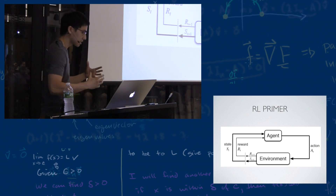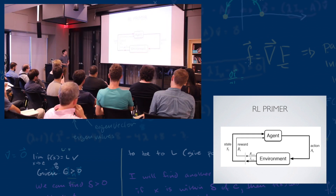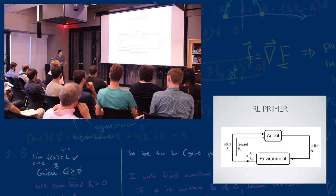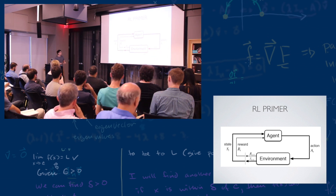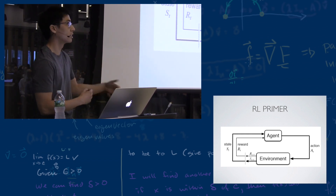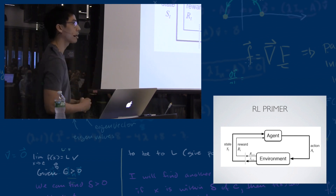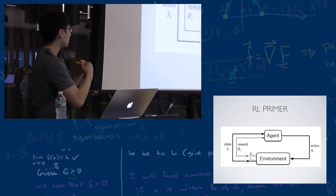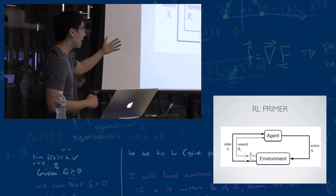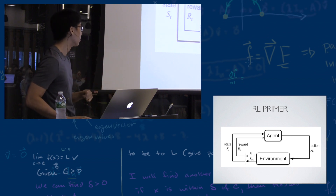So what exactly is RL? The very classical setup is we have an agent that interacts with an environment — you can think of the environment as nature. The agent plays actions in a loop, and upon playing an action, it receives some reward and transitions to a next state. The agent's goal is to maximize reward.